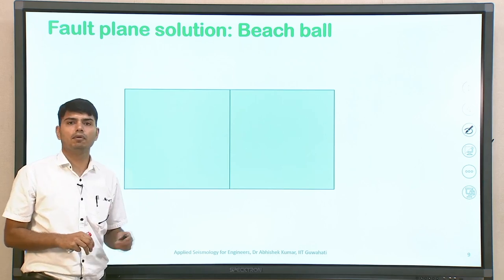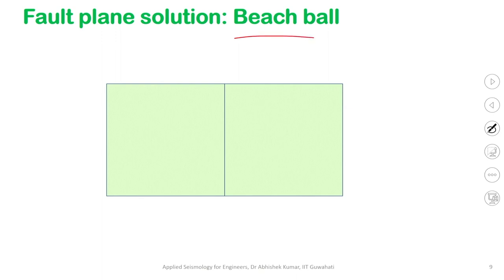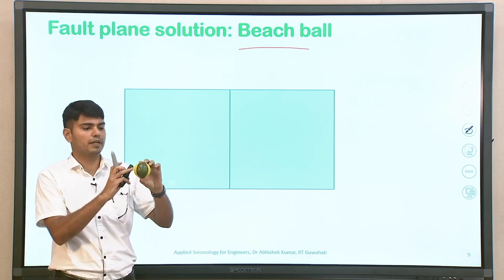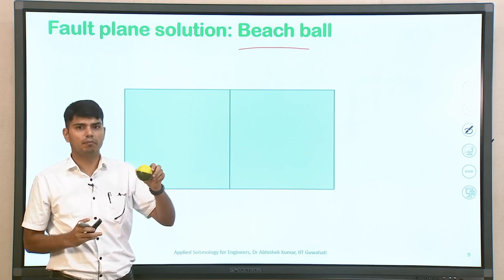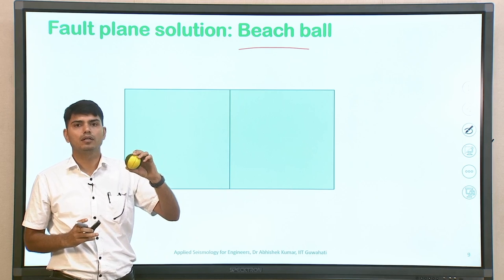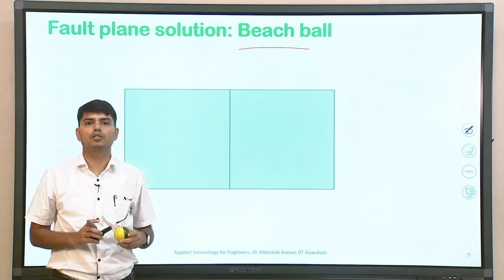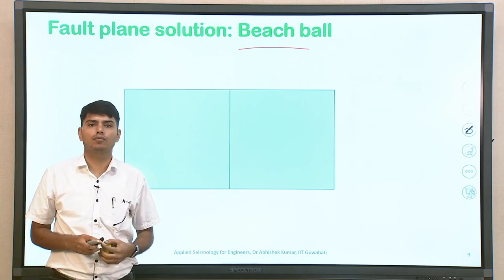In plan, for a strike-slip fault, the two blocks are moving with respect to each other. Based on first wave motion, some recording stations will indicate compression and some will indicate tension. Identifying those locations on this particular fault, you will be able to identify regions having only compression and regions having tension. The beach ball is generally represented on the lower hemisphere — whatever you see projected from the top or bottom represents the compression and tension zones on the map, which is the beach ball solution for that particular earthquake.